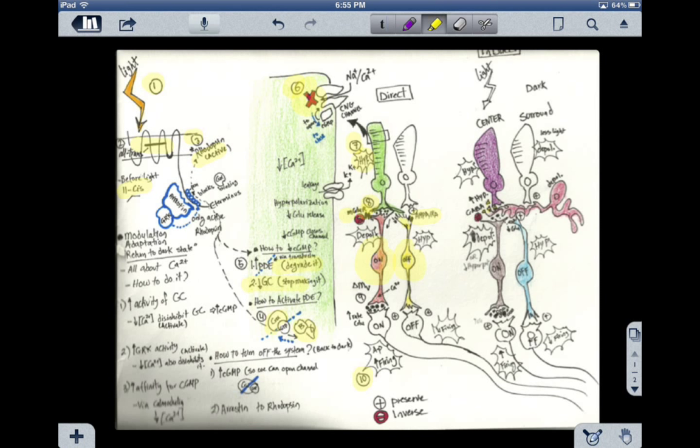So less glutamate means we reverse that signal. That becomes depolarization of the bipolar cell. After that, we have depolarization at the ganglion cell and a high firing rate at the ON-ganglion cells. Remember, action potentials only happen at the ganglion cell, and we have high firing.